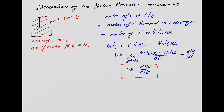However, what I'd like to now do is take a simplification, looking at constant density systems. In a constant density system, volume is constant. So taking the general equation, what we're saying is the reacting mixture volume won't change — in a constant density system, this volume stays fixed.